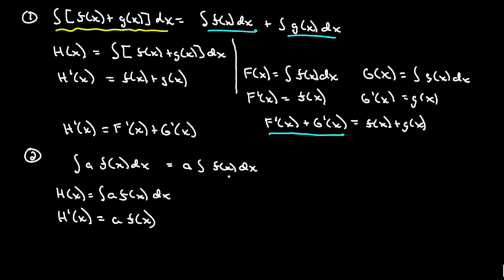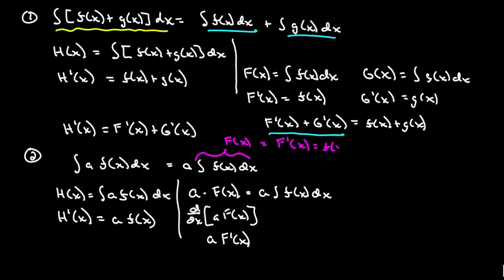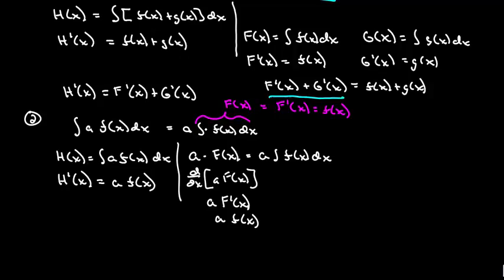Let's call this inside function large F of x, so what we have is a times large F of x, which is the same thing as a times the integral of f of x dx. Now if we differentiate this with respect to x, this is clearly a times F prime of x. And since F prime of x equals f of x, this is equal to a times f of x. So again, both sides are equivalent, which tells us that if we have a constant a inside, we can pull it out.